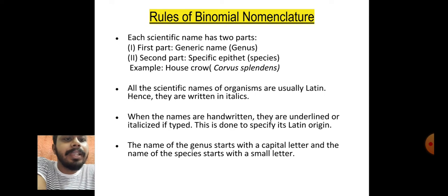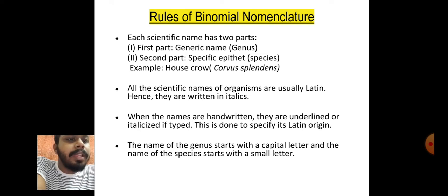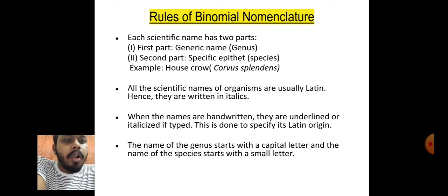The next rule is that all scientific names are usually in Latin, and hence they are written in italics. When the names are handwritten, they should be underlined. If typed, they should be in italics.